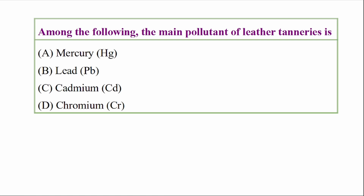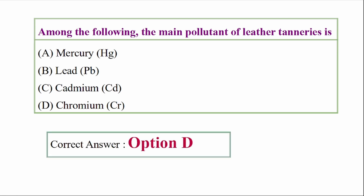Among the following, the main pollutant of leather tanneries is — options: mercury (Hg), lead (Pb), cadmium (Cd), chromium (Cr). Answer option D: chromium, Cr. The main pollutant of leather tanneries is chromium.